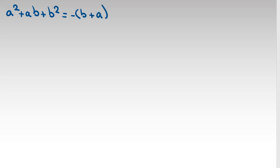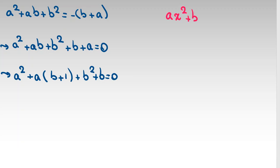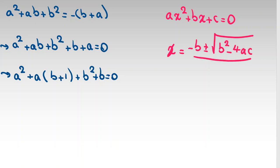We can consider this as a quadratic equation in terms of A and use the quadratic formula. Taking everything to the right-hand side: A squared plus AB plus B squared plus B plus A equals zero. Treating this as a quadratic in A, the coefficient of A is B plus 1, and the constant term is B squared plus B. The quadratic formula gives: X equals negative B plus or minus square root of B squared minus 4AC, all over 2A.